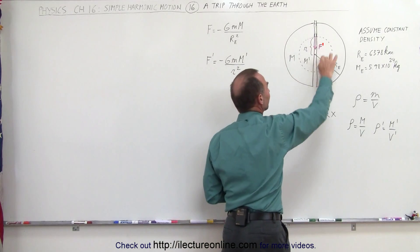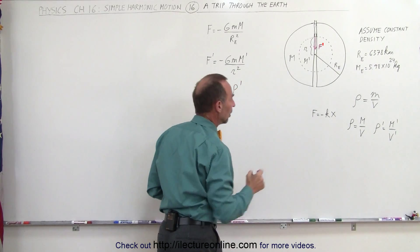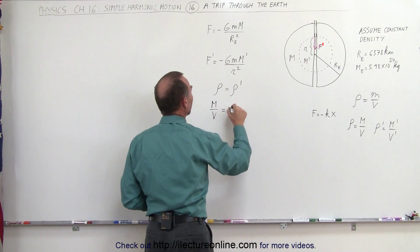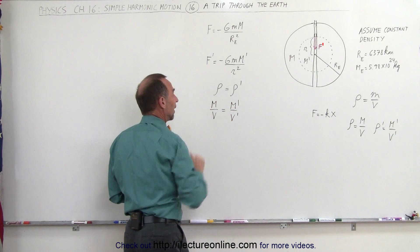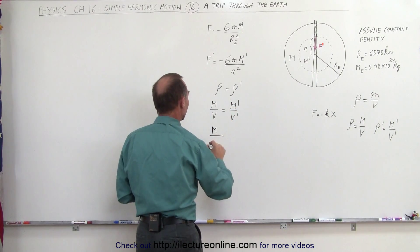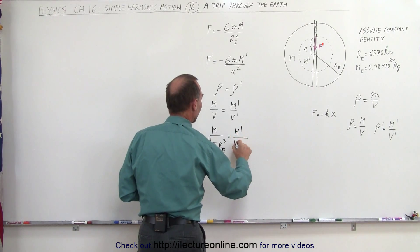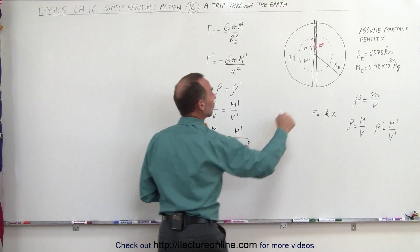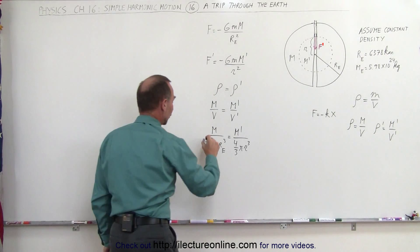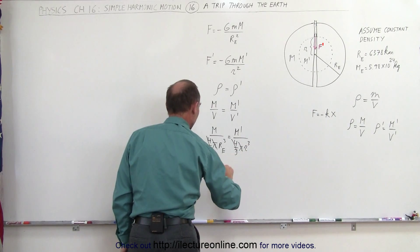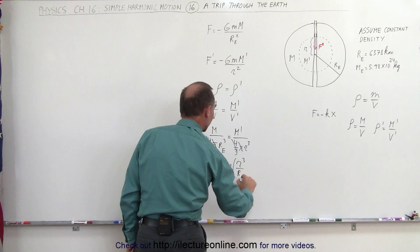Since the density is uniform, we can say M divided by the total volume equals m prime divided by volume prime. The total volume of the earth is four-thirds pi times the radius of the earth cubed, and this equals m prime divided by four-thirds pi times r cubed. The four-thirds and pi cancel on both sides, giving us m prime equals M times r cubed divided by the radius of the earth cubed.